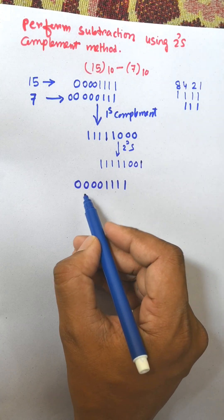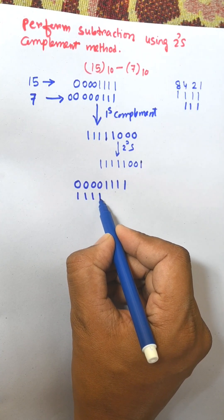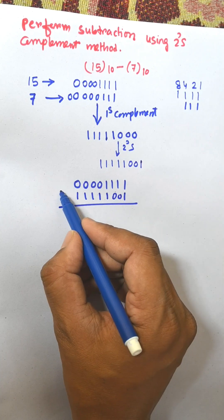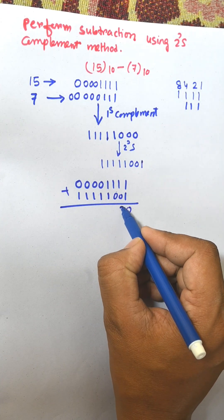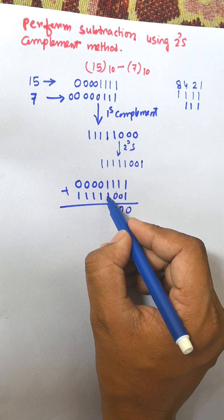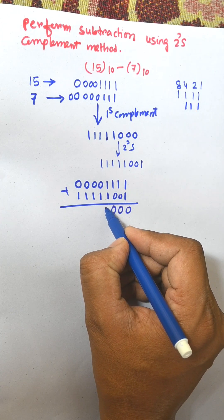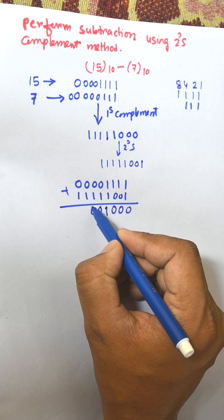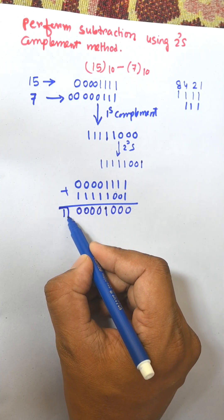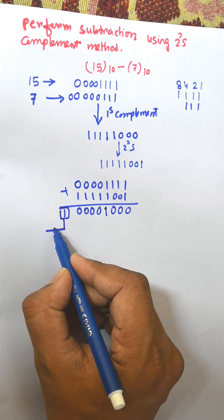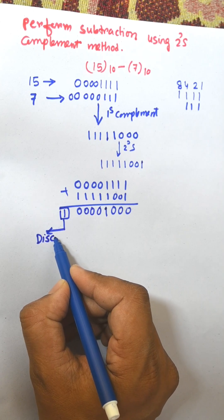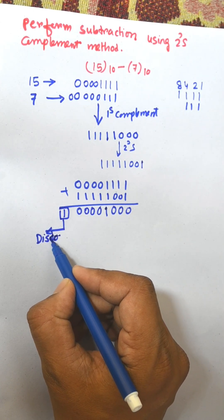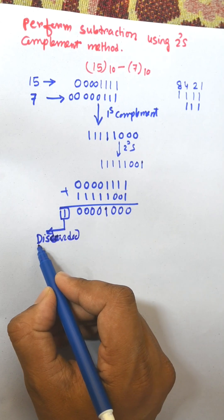Now we add the two values: 0 0 0 0 1 1 1 1 (15) plus 1 1 1 1 1 0 0 1 (2's complement of 7). This is a normal addition. The result produces a carry bit that overflows the capacity of the 8-bit register — it is discarded and ignored.